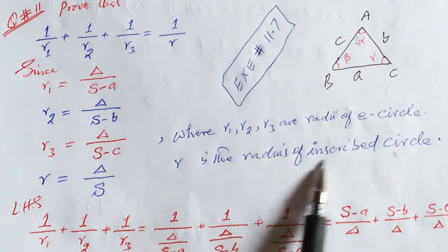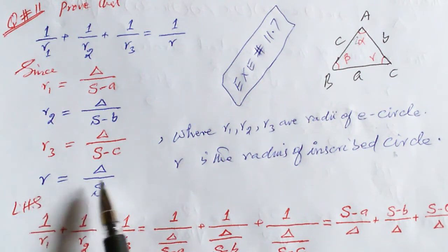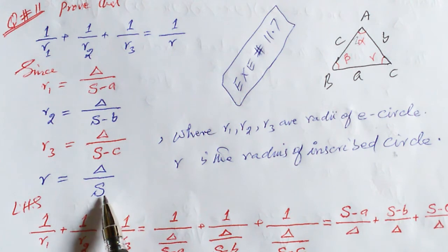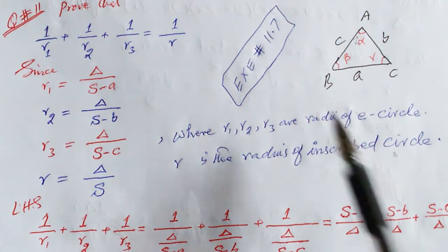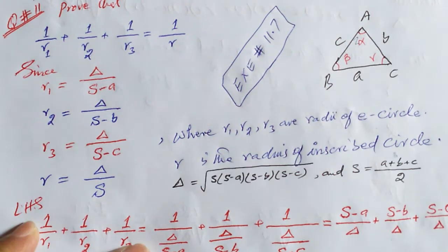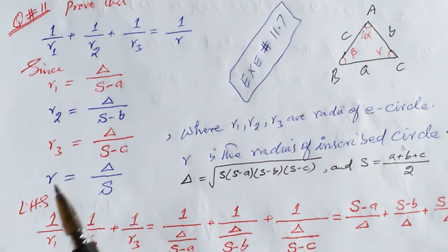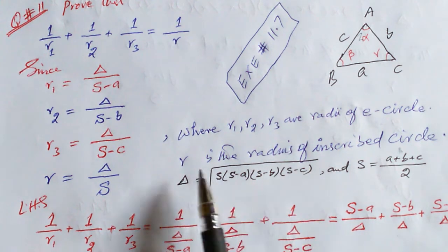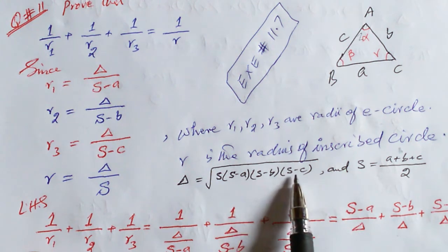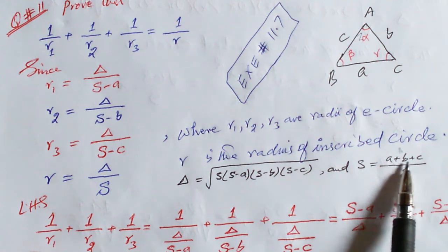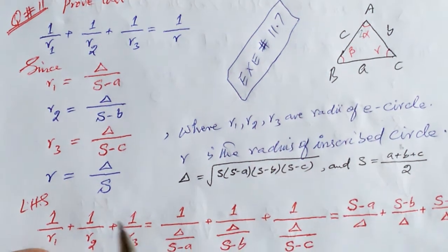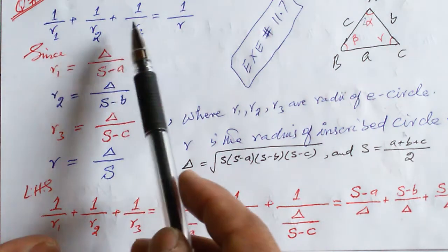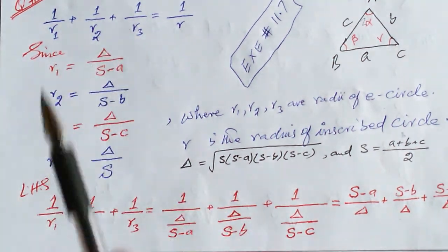The radius r of the inscribed circle is calculated by the formula r = Δ/s, where Δ is the area of triangle ABC. The area Δ can be calculated from Heron's formula: Δ = √(s(s−a)(s−b)(s−c)), and s is the semi-perimeter, i.e., s = (a + b + c)/2.